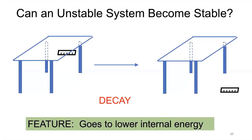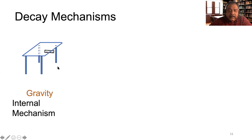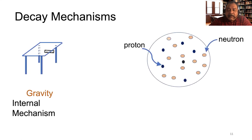Let's further look at decay. Here's a system that is going to decay. What causes it to go into a lower internal energy? In order for a system to decay, it needs an internal mechanism — in this case, it's the gravitational force that causes the ruler to fall to the ground. So a gravitational force is the internal mechanism that causes the system to decay. For a nucleus, the radiation comes from the nucleus, so the nucleus is the one that is unstable and will decay.